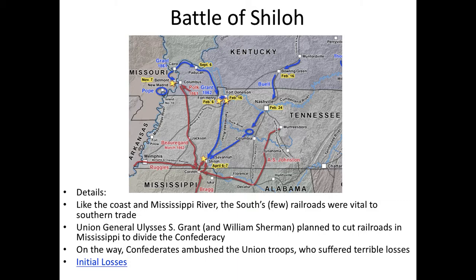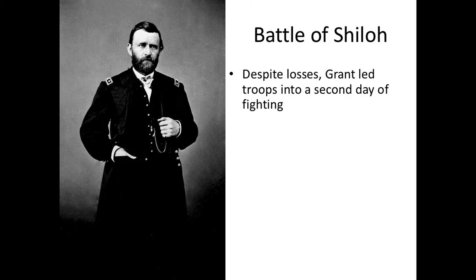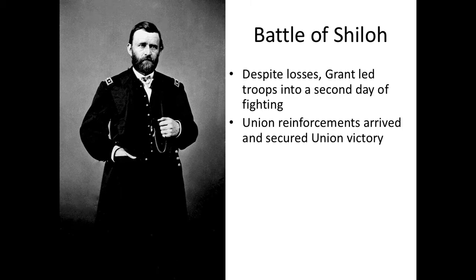This will be a two-day battle. On the first day, the Union is going to pretty much lose but they hold off and don't retreat. When nighttime comes the two sides stop fighting and resume the next day. On the second day, Grant gets some help — Union reinforcements come down a river to assist. The second-half comeback is led largely by Ulysses Grant, and these Union reinforcements help secure a victory for Grant and for the Union.